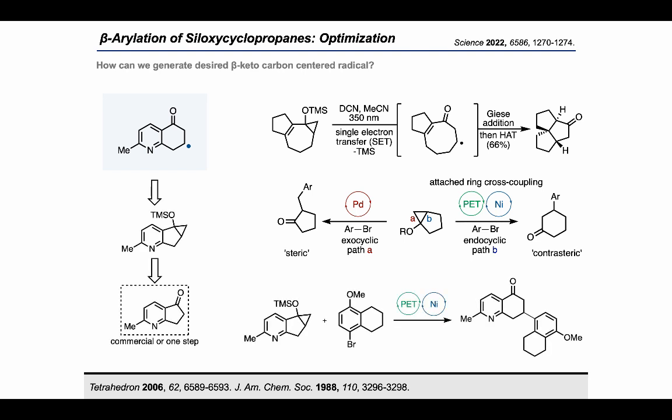With a few more details of this key step fleshed out, we established a brief retrosynthesis to access our required pyridine siloxycyclopropane, and we were excited to see that the starting material was commercial or one step from commercial. We also identified our desired coupling partner as this easily accessible aryl bromide and had a general idea of what reagents to use to begin screening and optimization.